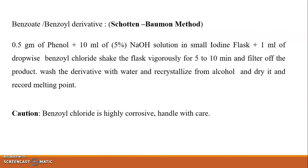The procedure for benzoate or benzoyl derivative is known as a Schotten-Baumann technique or Schotten-Baumann method. The procedure is: take 0.5 gram of phenol and add 10 ml of 5% sodium hydroxide solution in small iodine flask.